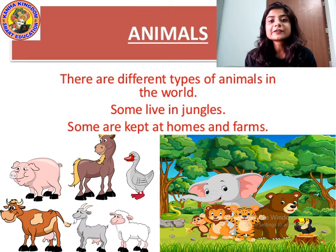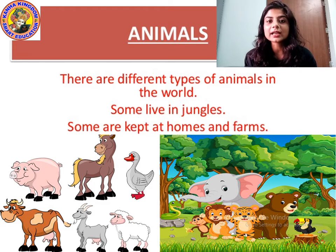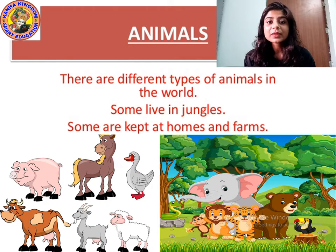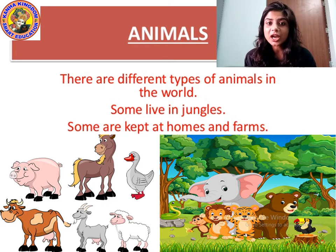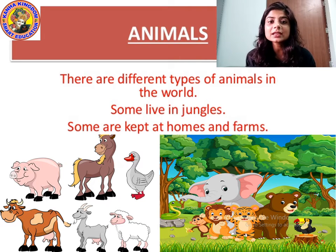Some animals live in the jungle. Which animals live in the jungle? The wild animals live in the jungle, like lion, tiger, elephant, and deer. Monkeys — where do they live? They live in jungles. Then some animals are kept at homes and farms. Some animals we keep at home and in the farm.